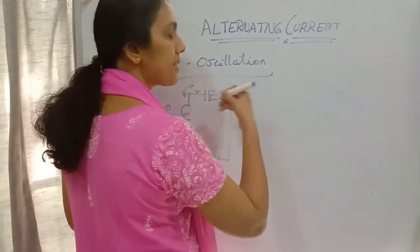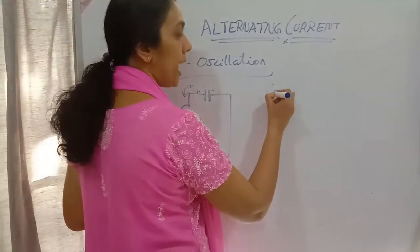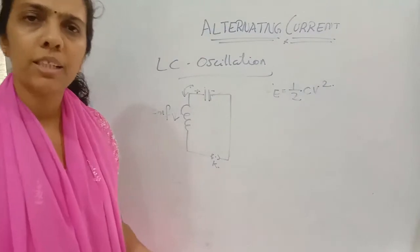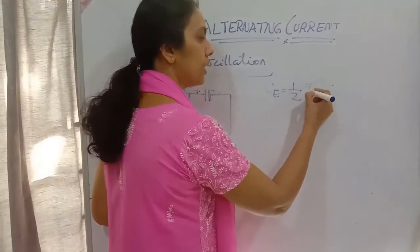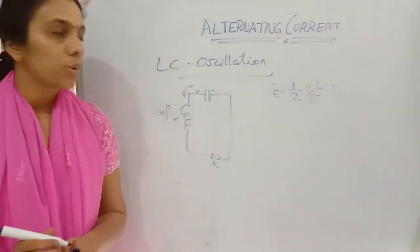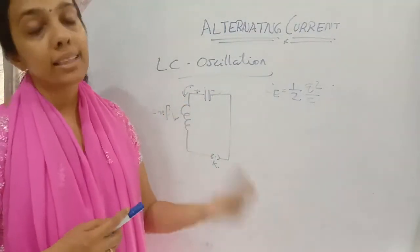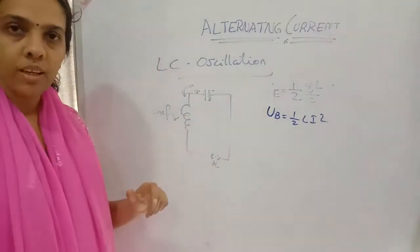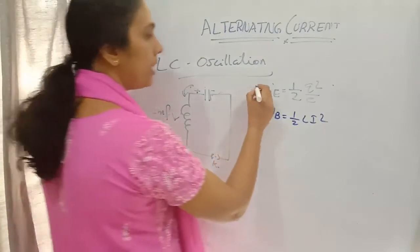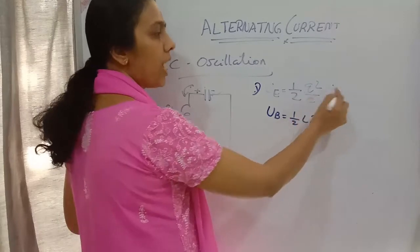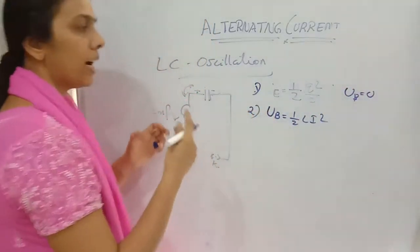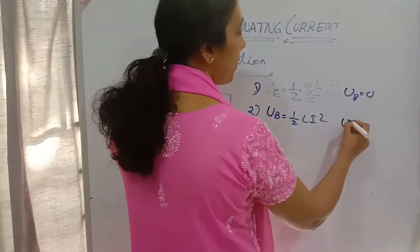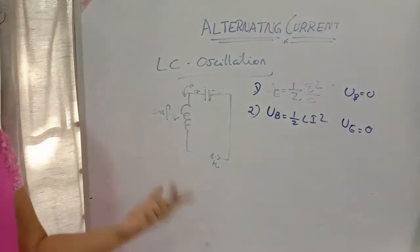Initially the capacitor is fully charged and magnetic energy is zero. As it discharges, magnetic energy slowly increases to its maximum value, at which point the electrical energy of the capacitor equals zero — meaning it is fully discharged. Then the magnetic field starts to reduce, which again changes the magnetic flux; the EMF induced now helps to increase the current, and the capacitor starts charging again, reaching maximum electrical energy q squared by 2C, while magnetic energy becomes zero.